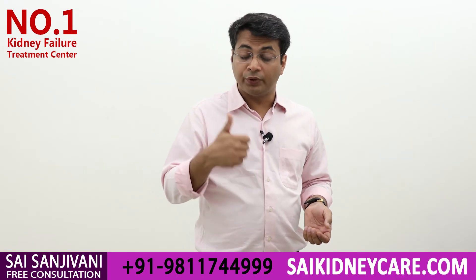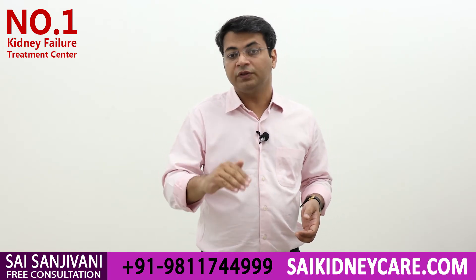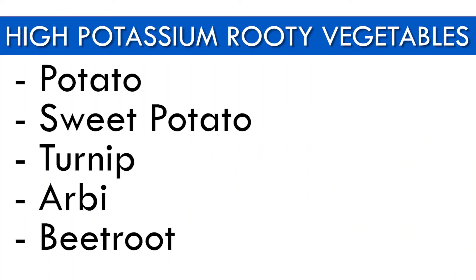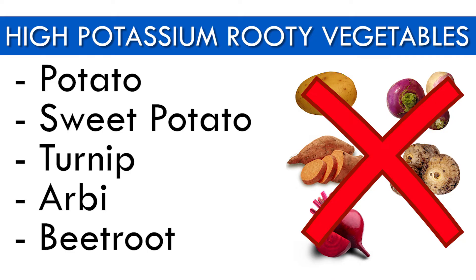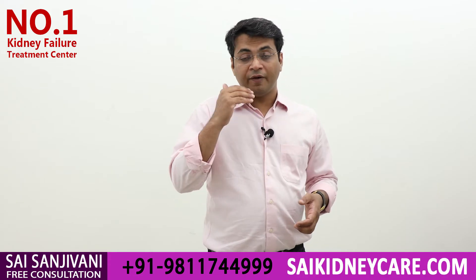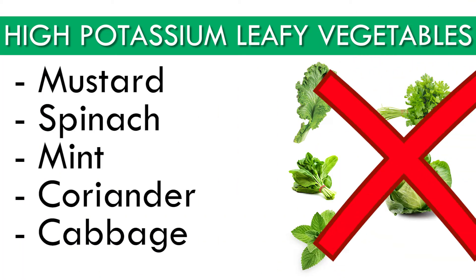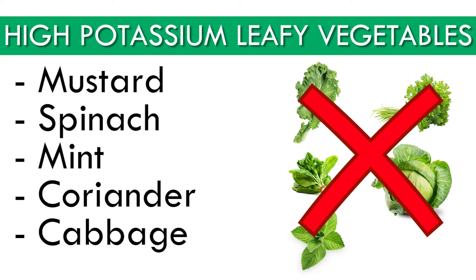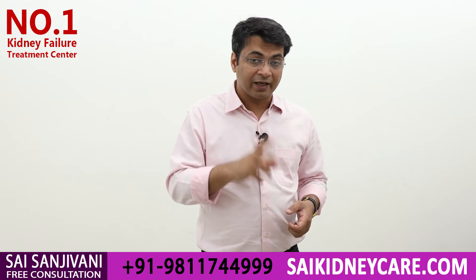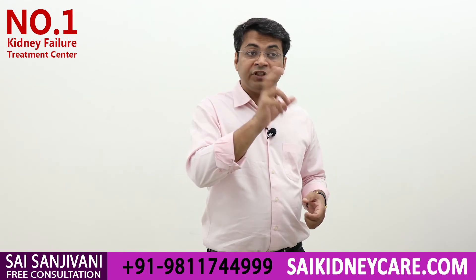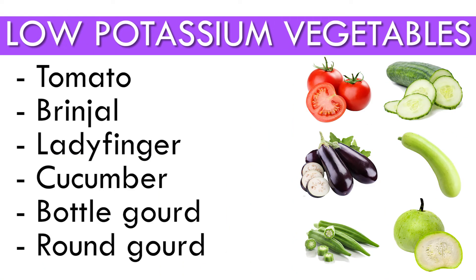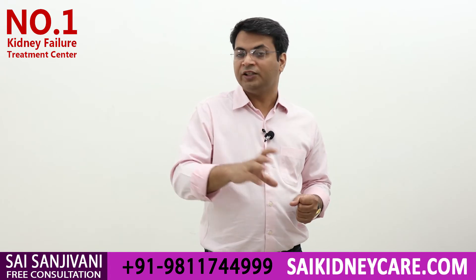Any vegetable grown below the surface of the earth — tubers like potatoes — contains large amounts of potassium and should be avoided. Leafy vegetables such as mustard, spinach, coriander, and mint should also be avoided. What you can eat is any vegetable that grows as a fruit on a plant or creeper, as these contain low potassium — vegetables like tomato, brinjal, okra, beans, bitter gourd, and snake gourd.